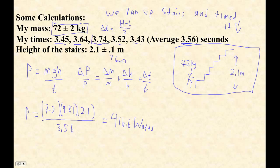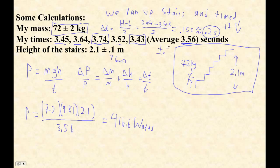The uncertainty of time is going to be the high minus the low over 2. The high time is 3.74 and the low time is 3.43. So 3.74 minus 3.43 divided by 2 gives me 0.155. I'm going to say it's about 0.2 seconds, because we want one-digit uncertainties and I'll always round up. So the time is 3.56 plus or minus 0.2.